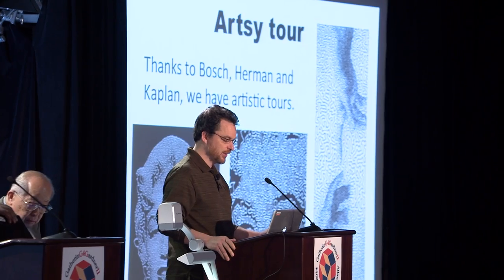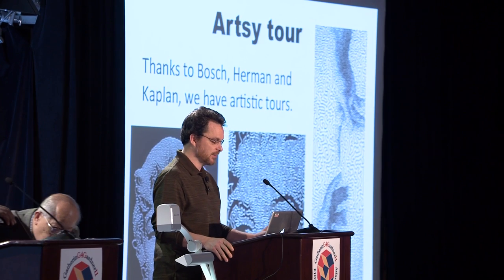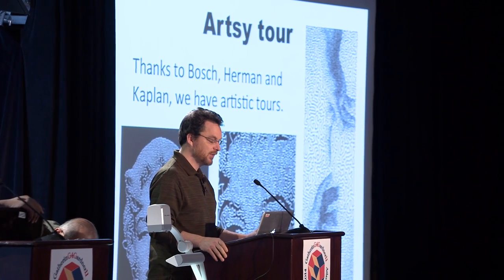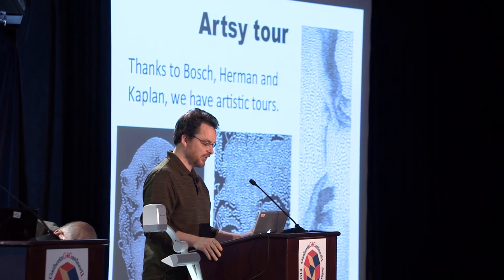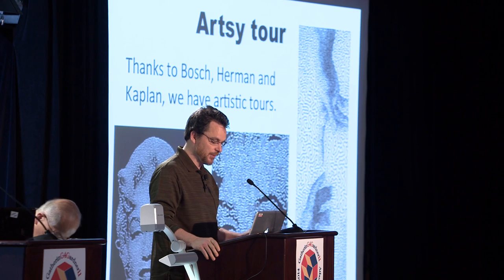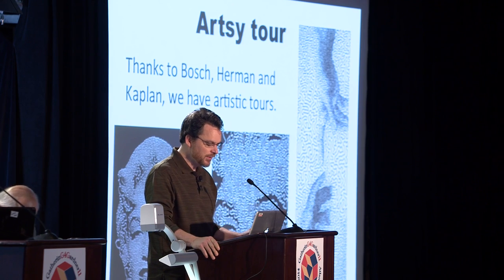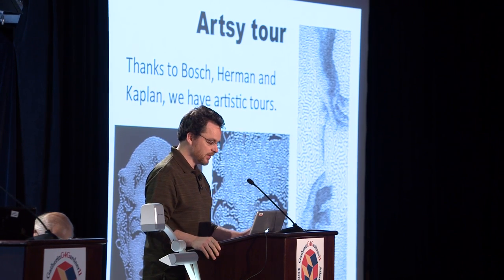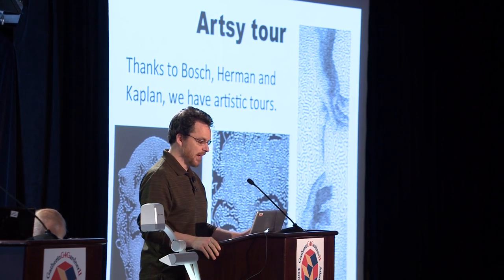We saw a talk earlier by Craig Kaplan, Bob Bosch, and Herman, who worked on applying this to artistic images — as we see here with the stippling of Marilyn Monroe — where the cities are a stippling of a particular underlying image that you have.